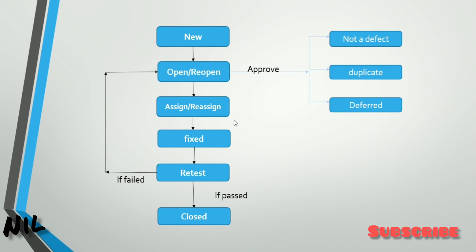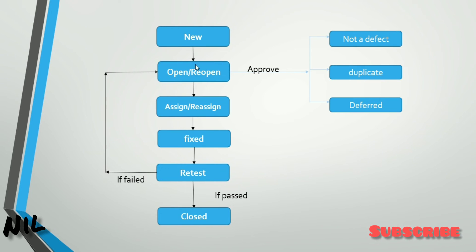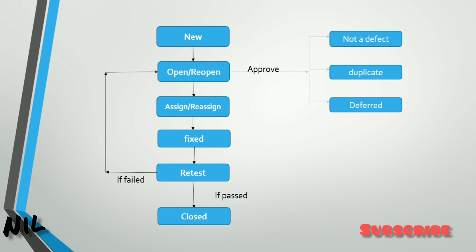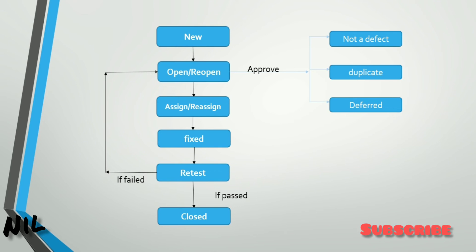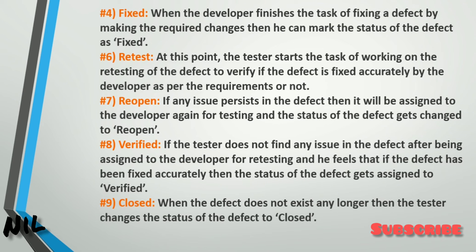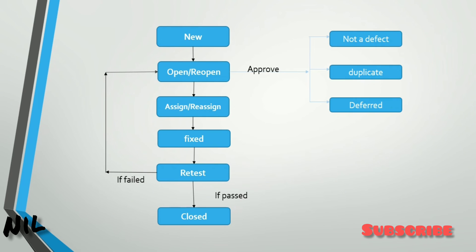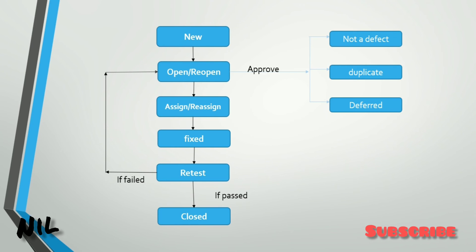The developer will work on the Fix stage. When the developer accepts the defect, the bug goes into the fixing stage. When the developer finishes their task of fixing the defect by making the required changes, they can mark the status of the defect as Fixed. Whatever the defect is, the developer will fix and modify it, then it goes into the Fixed state.